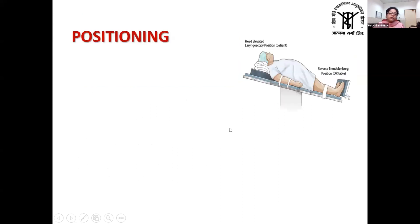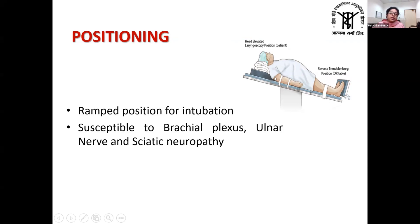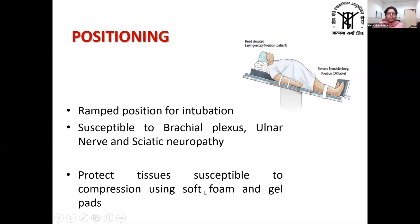Reverse Trendelenburg position is very important, as it improves respiratory mechanics by shifting the diaphragm downwards. For intubation, the ramped position — also called the HELP position (Head Elevated Laryngoscopy Position) — is needed, where the external auditory meatus (tragus) is aligned with the sternal angle, bringing the oral-laryngeal-pharyngeal axes into a straight line. Strapping must be done properly to prevent patients sliding off the table. These patients are susceptible to brachial plexus, ulnar nerve, and sciatic neuropathy, so proper padding with soft foam and gel pads should be used to avoid injuries.